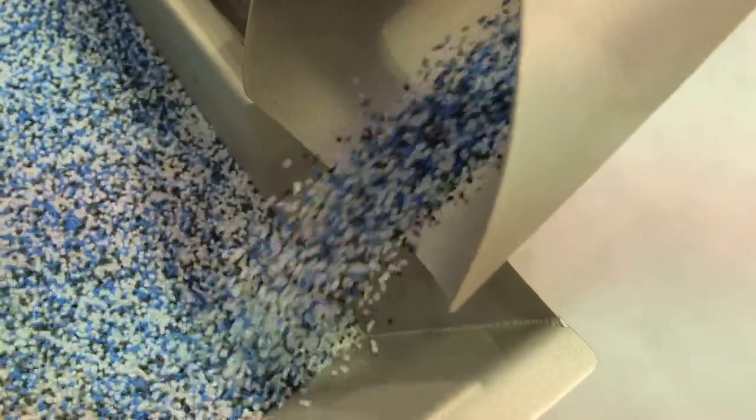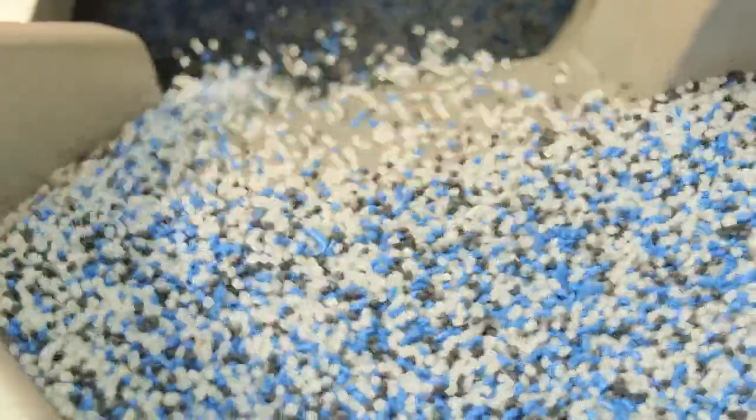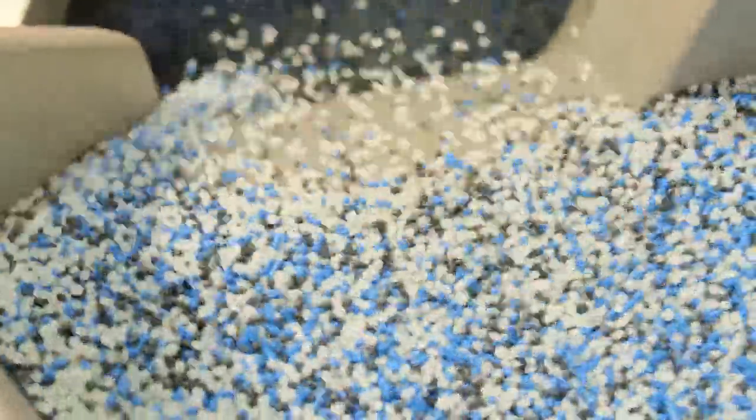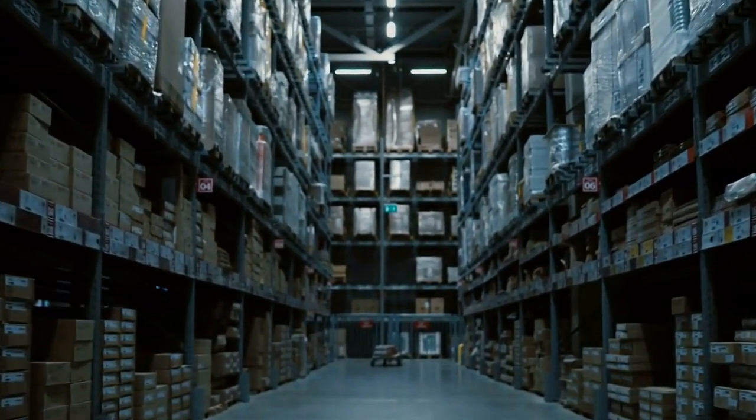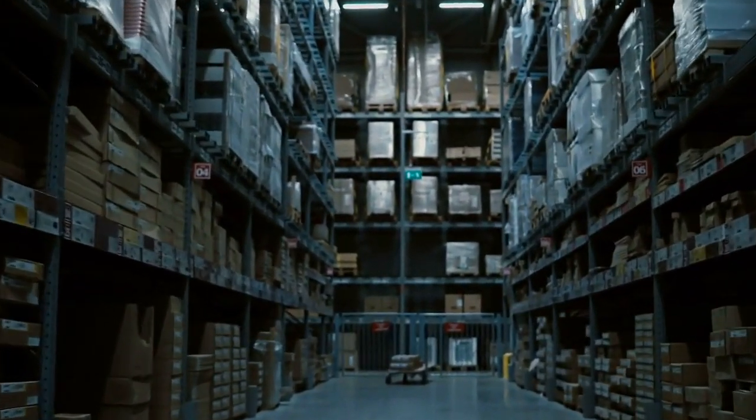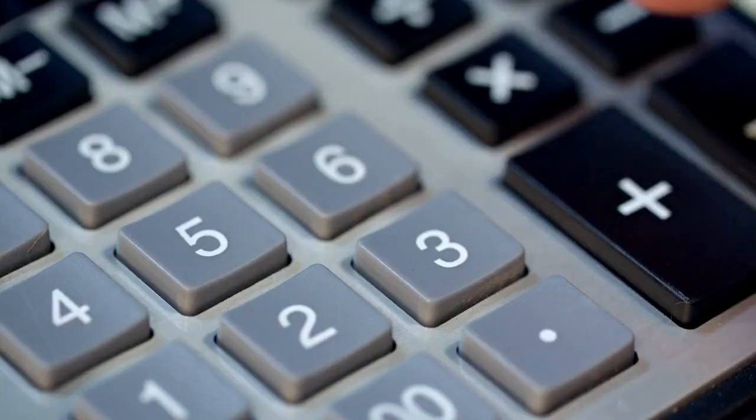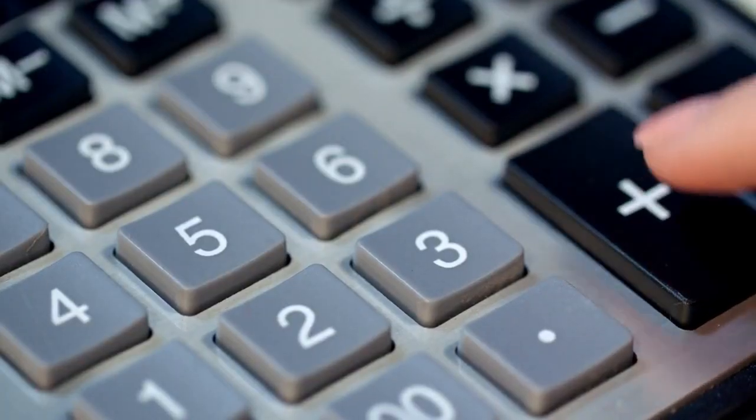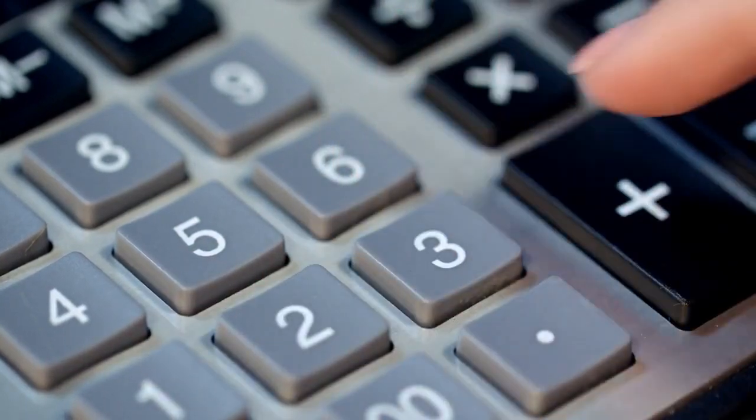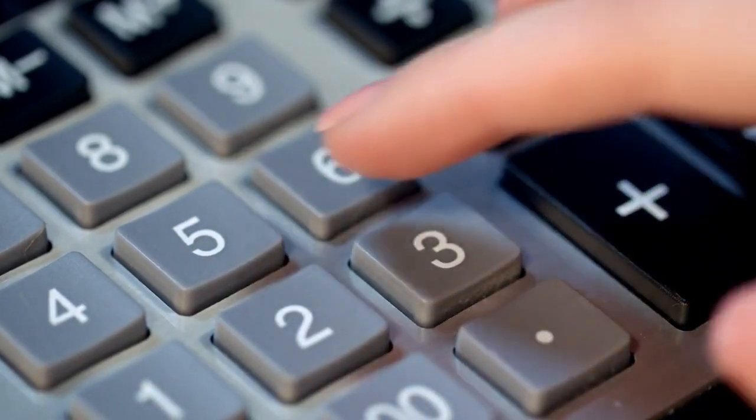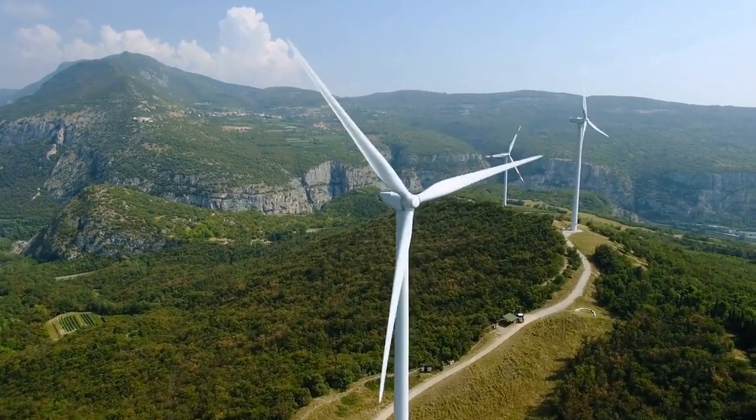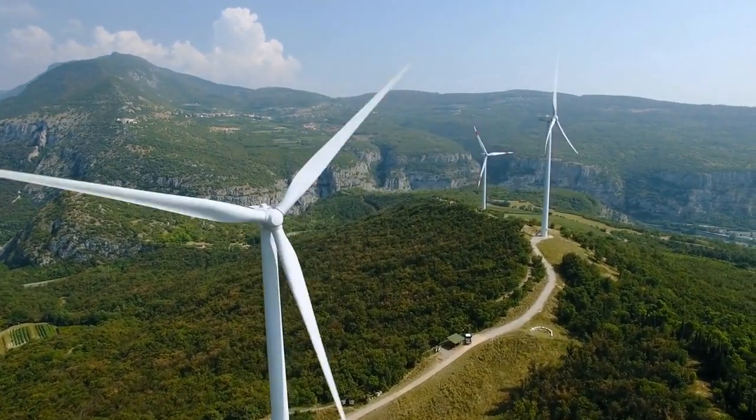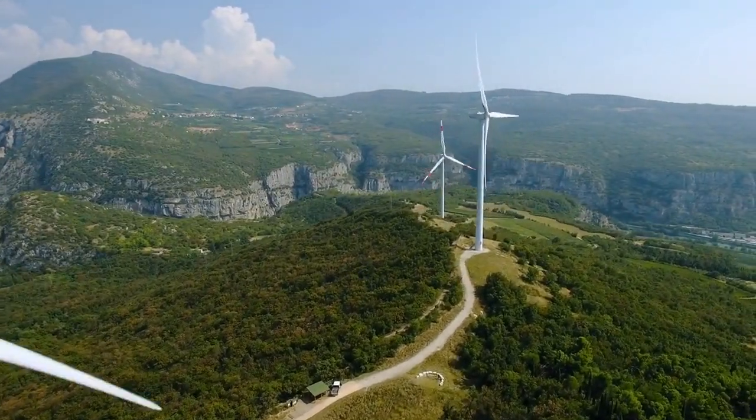The next stage in the manufacturing process is material selection. Casio uses only the highest quality materials in their calculators to ensure that they are both durable and reliable. Each component of the calculator, from the buttons to the display screen, is carefully chosen to meet Casio's exacting standards. The materials used are also chosen based on their environmental impact, with Casio using eco-friendly materials wherever possible.